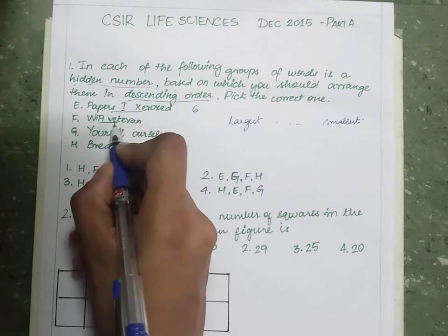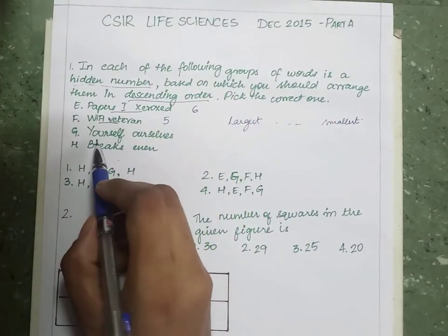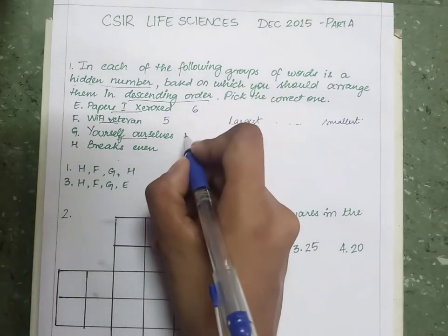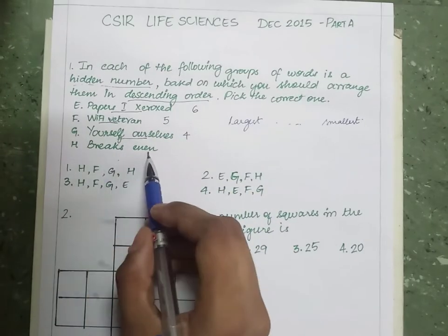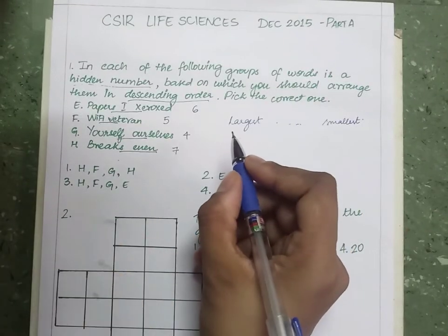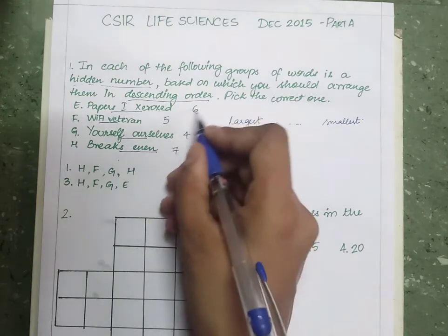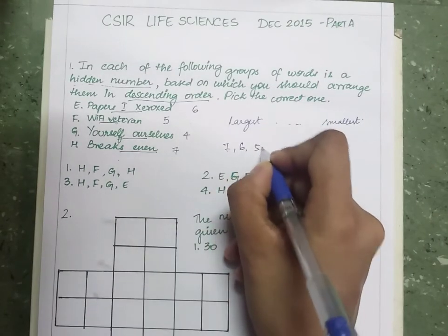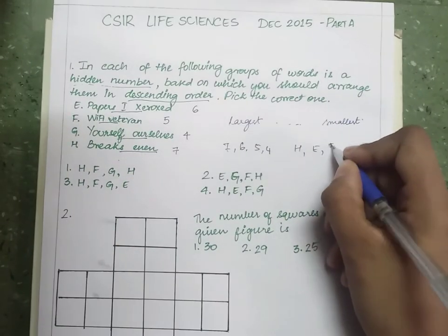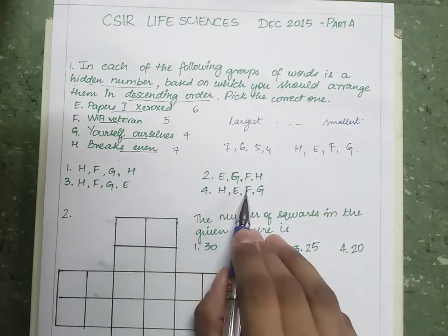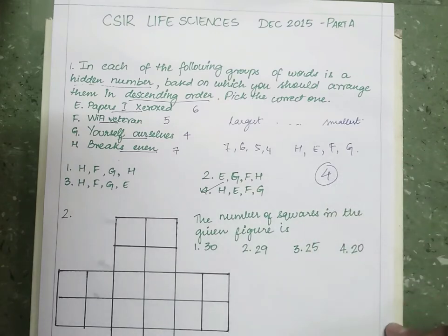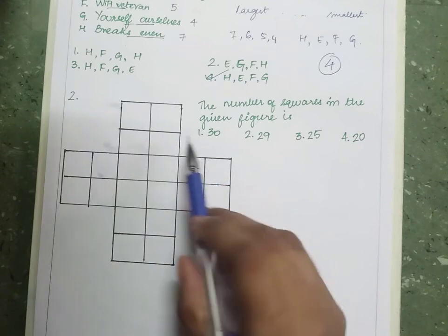Then 'yourself/ourselves' — we see four is present. And 'break 7' — we see seven is present. So the descending order arrangement is 7, 6, 5, and 4, which corresponds to H, E, F, and G. So option 4, H E F G, is the correct answer.